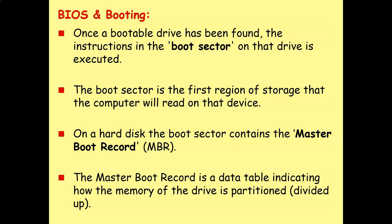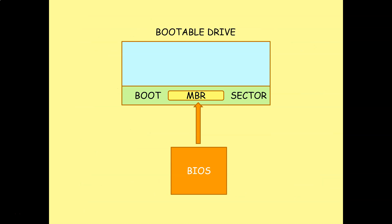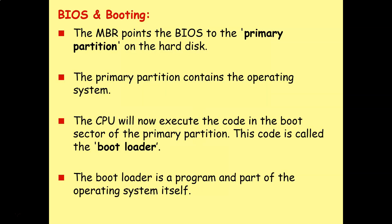Once the bootable drive has been found, the instructions in the boot sector on that drive are executed. The boot sector is the first region of storage that the computer will read on that device. On a hard disk, the boot sector contains what we call the Master Boot Record, or MBR — a data table indicating how the memory on that drive is partitioned. The BIOS goes to the bootable drive, finds the boot sector, and inside that finds the MBR, which points the BIOS to the primary partition on the hard disk — the partition that contains the operating system.